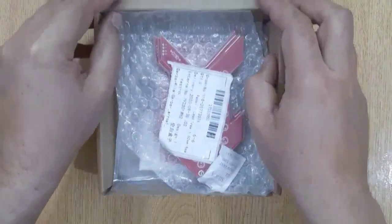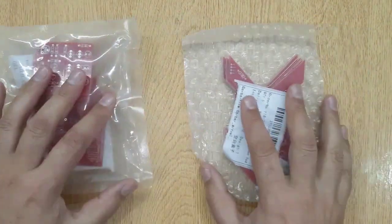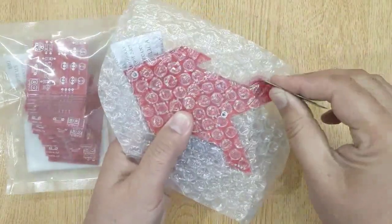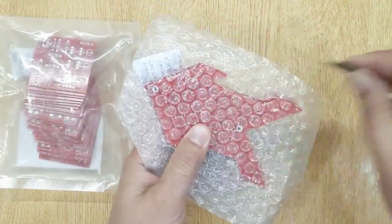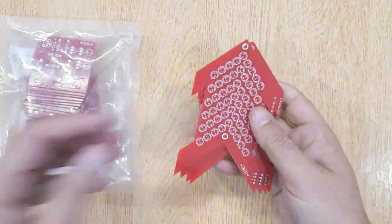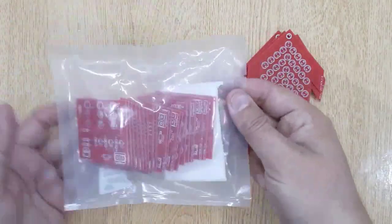I ordered these PCBs on jlcpcb.com. There are two different PCBs. Let's open it. This one is an Arrow. There are 54 LEDs we have to solder on it. Let's open the next one.